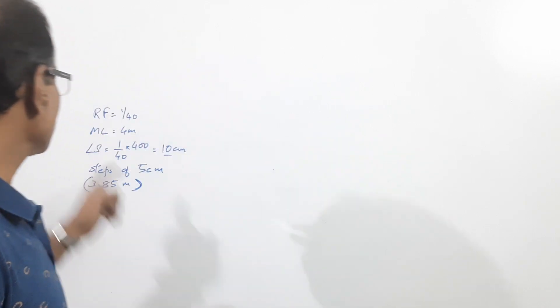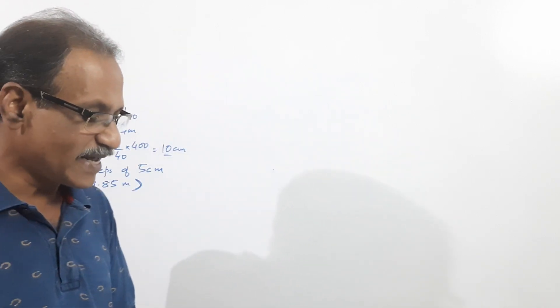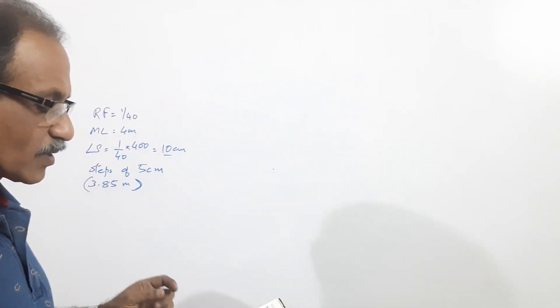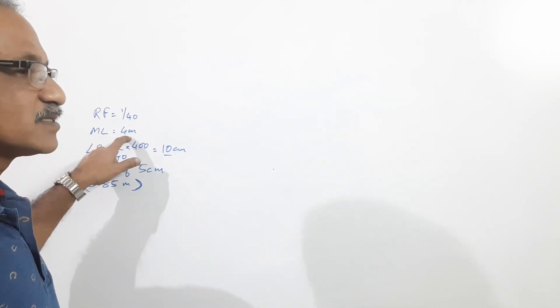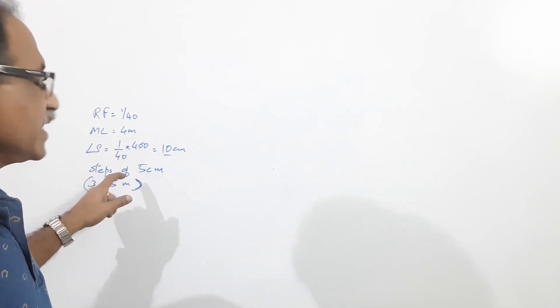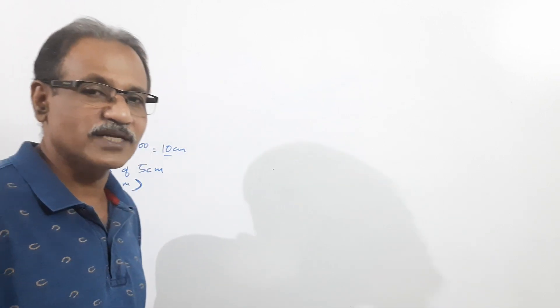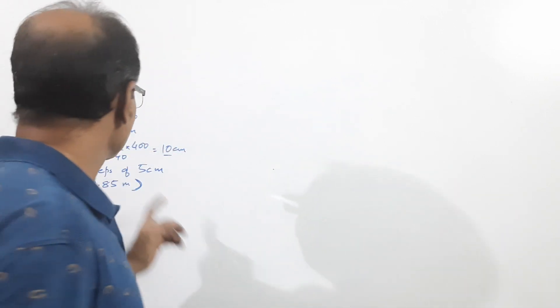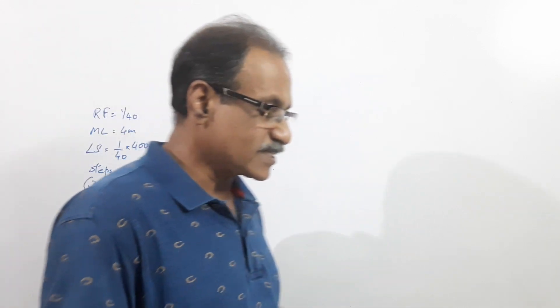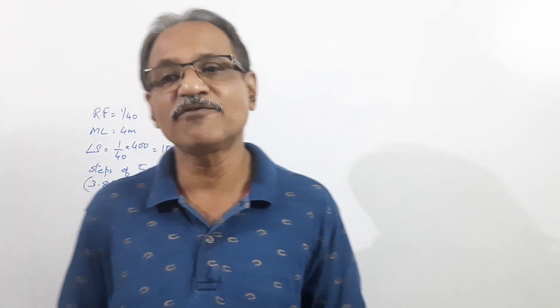The question says the RF of a backward reading vernier scale is 1 by 40. The maximum length to be measured is 4 meters in steps of 5 centimeters. What does it mean? Least count equals 5 centimeters. You are asked to construct the scale and show a distance of 3.85 meters on it.